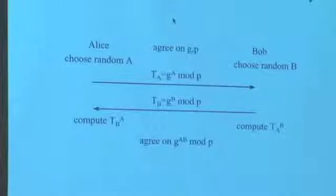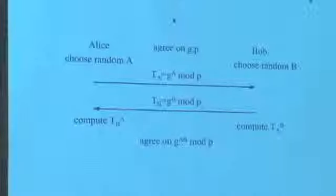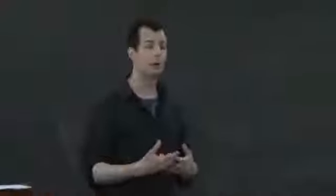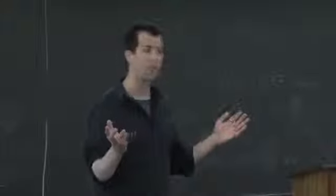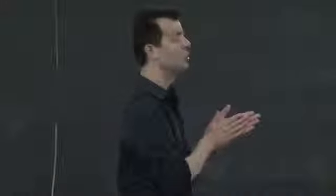Alice takes T_B — G to the B mod P — and raises it to the power of A, then does modulo P again. Thanks to mathematical properties, what she gets is G to the A times B mod P. Bob does the same in the opposite order and gets the exact same result. Alice has secret number A that she never sent across the wire; Bob has secret number B that he never sent. But both magically share the big number G to the A times B mod P — a shared secret that never traversed the wire.